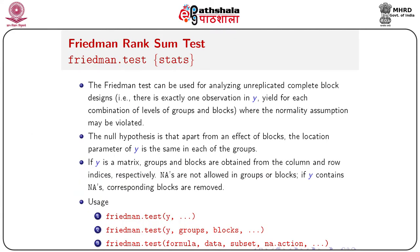In this module we will discuss a few more non-parametric tests — it's a continuation of the previous module. We start with the Friedman rank sum test. The Friedman test can be used for analyzing the unreplicated complete block design, where there is exactly one observation in each combination of levels of groups and blocks, and the normality assumptions may be violated. The null hypothesis is that apart from a block effect, the location parameter of y is the same in each group.